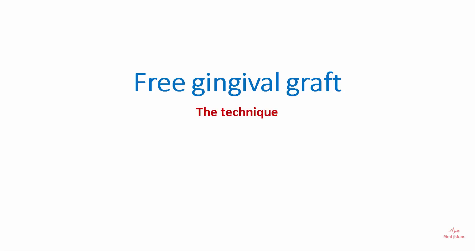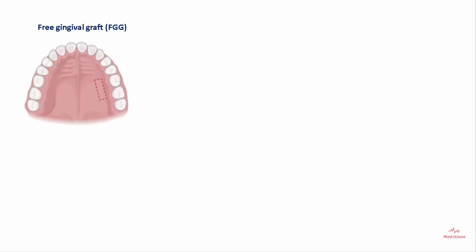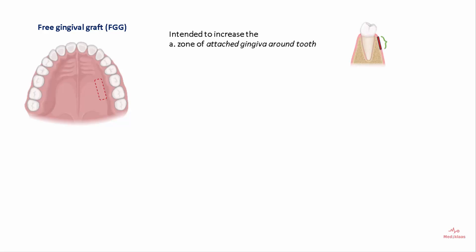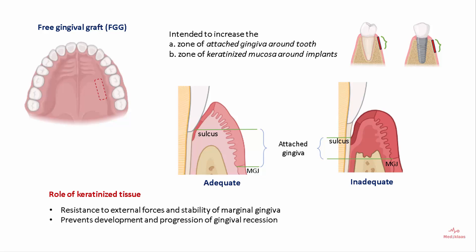Free gingival graft is a portion of keratinized tissue intended to increase the zone of attached gingiva around teeth and the zone of keratinized mucosa around dental implants. The attached gingiva extends from the base of the sulcus up to the mucogingival junction; it is normally adequate around healthy teeth but inadequate around teeth with periodontitis. The role of keratinized tissue is to provide resistance to external forces, stability of marginal gingiva, and to prevent development and progression of gingival recession.